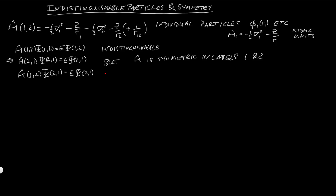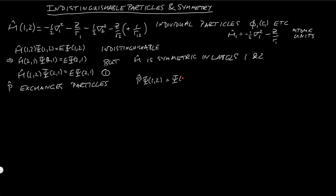I'm going to label that equation 1. Now let's think about a new operator, p-hat, which I define as the operator that exchanges particle labels. This is not an observable operator, but it is a perfectly valid operator. So if we had p-hat acting on the wave function psi(1,2), we would end up with the wave function psi(2,1).